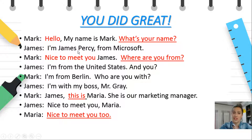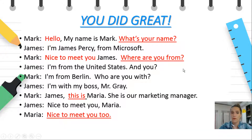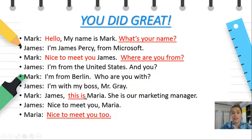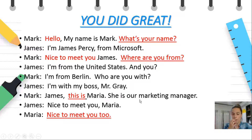I'm James Percy from Microsoft. Nice to meet you, James. As we said, we use the expression nice to meet you to express that we are really pleased to meet a person we don't know. So now Mark is asking for more information again: where are you from? I'm from the United States. And you? I'm from Berlin. Who are you with? I'm with my boss, Mr. Gray. James, this is Maria — so the third gap is this is. With these two words, this is, you're introducing a new person to the conversation. Nice to meet you, Maria. And the fourth gap is nice to meet you too. Well done, I think you did great.